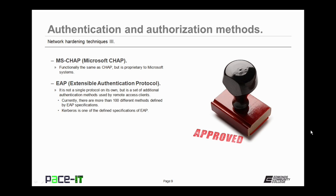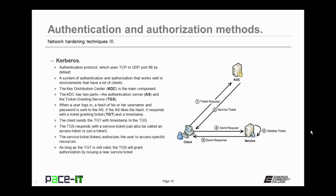You might also implement one of the forms of Extensible Authentication Protocol, or EAP. It's not a single protocol on its own, but a set of additional authentication methods used by remote access clients. Currently there are more than 100 different methods defined by the EAP specifications. One of the more popular is Kerberos. Kerberos is an authentication protocol which uses TCP or UDP port 88 by default. It's a system of authentication and authorization that works well in environments that have a lot of clients. The main component of Kerberos is the Key Distribution Center, or the KDC.